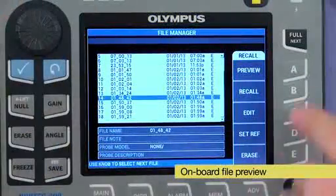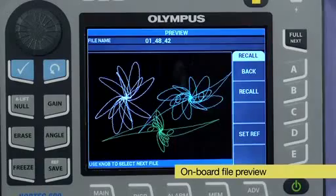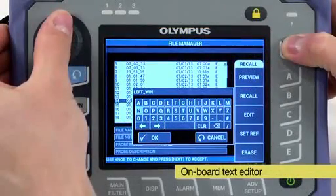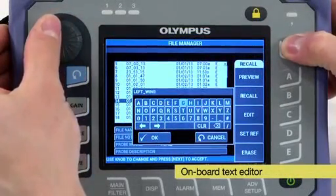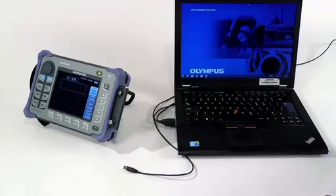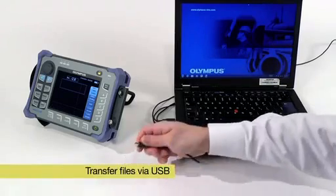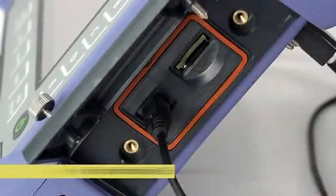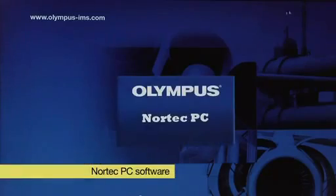The Nortec 600 features an onboard file preview before the files are loaded. The onboard text editor also allows renaming files as needed. Once the inspection is completed, the files can easily be transferred to a computer via the USB cable and viewed using Nortec PC software.